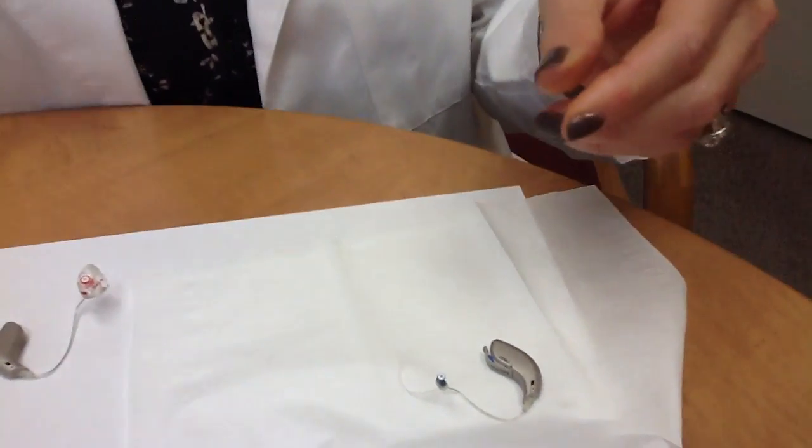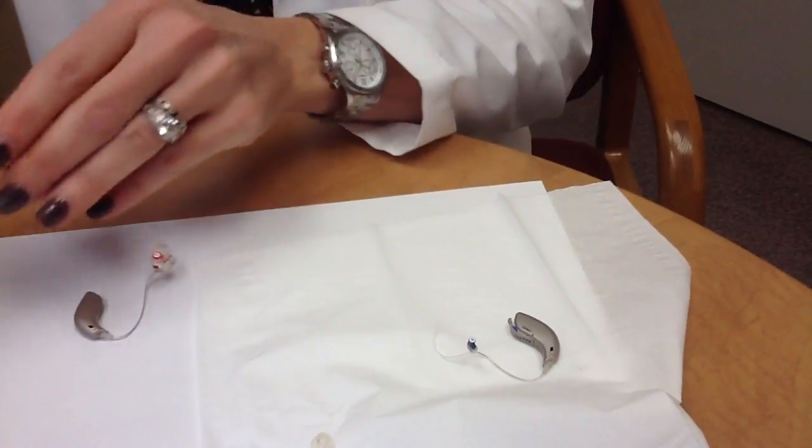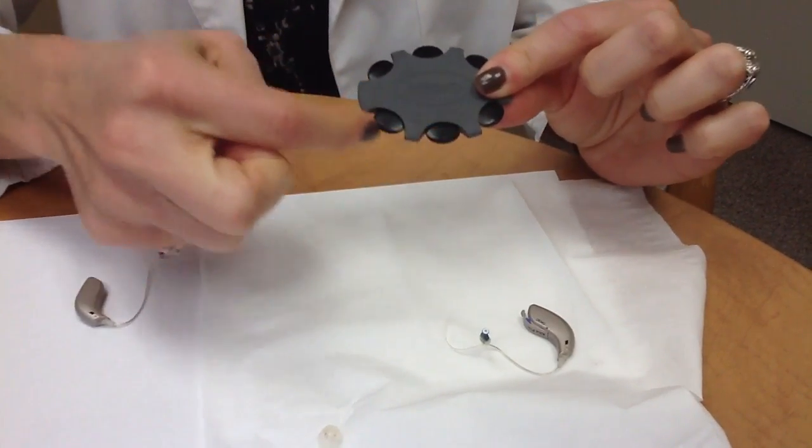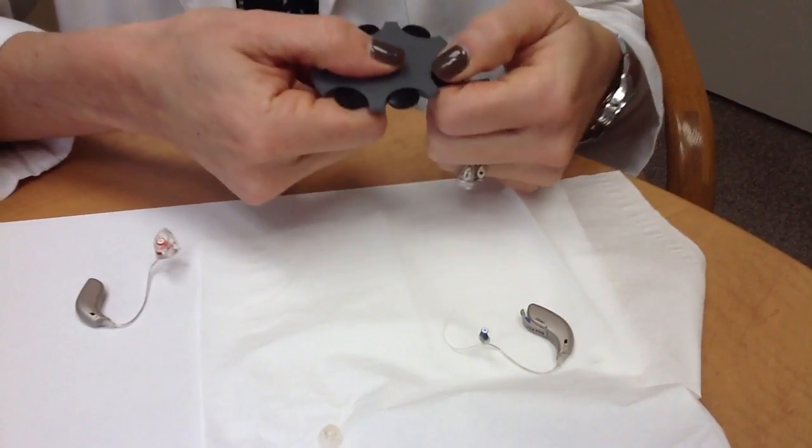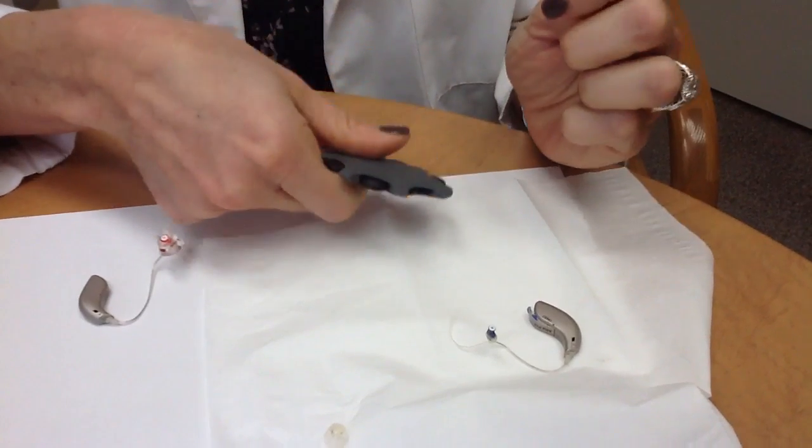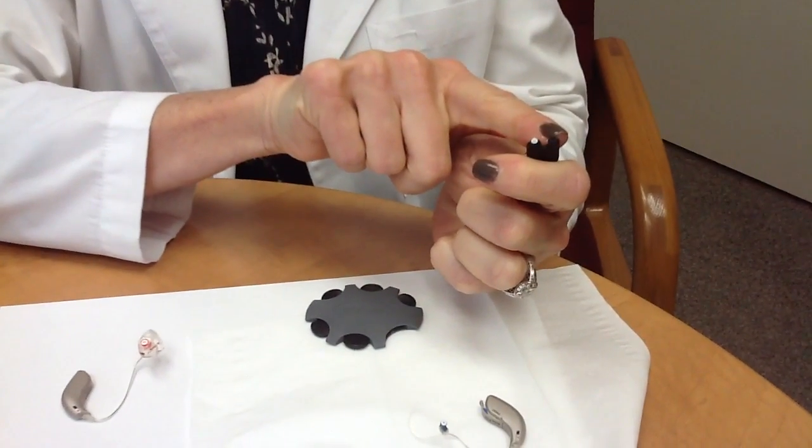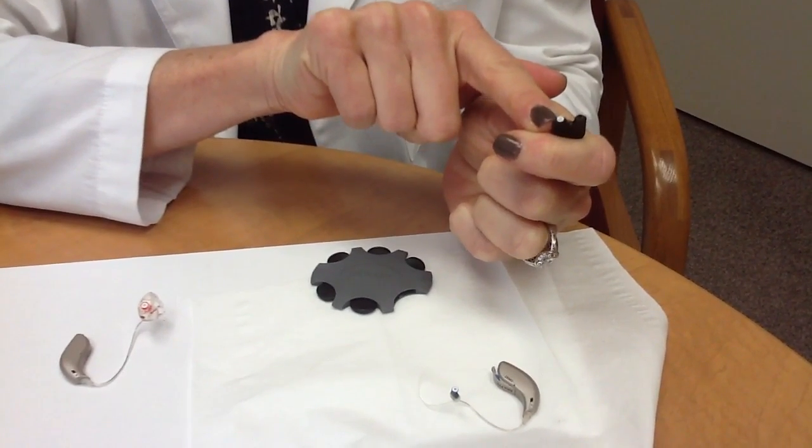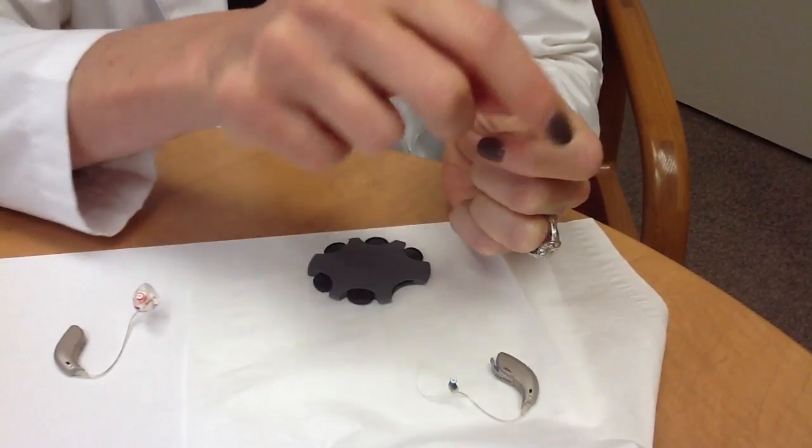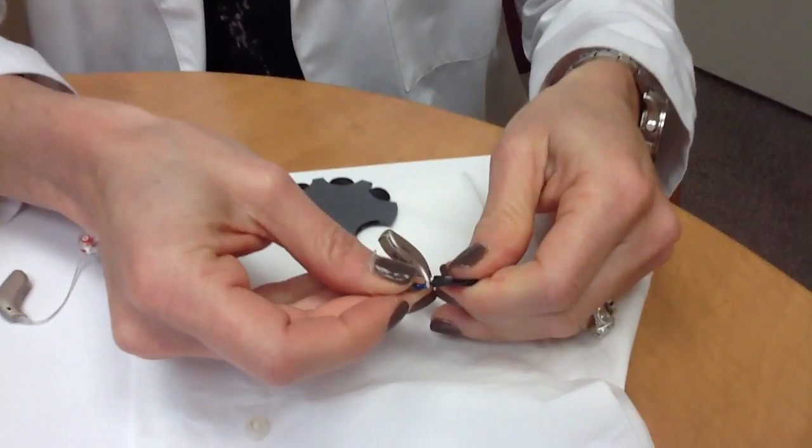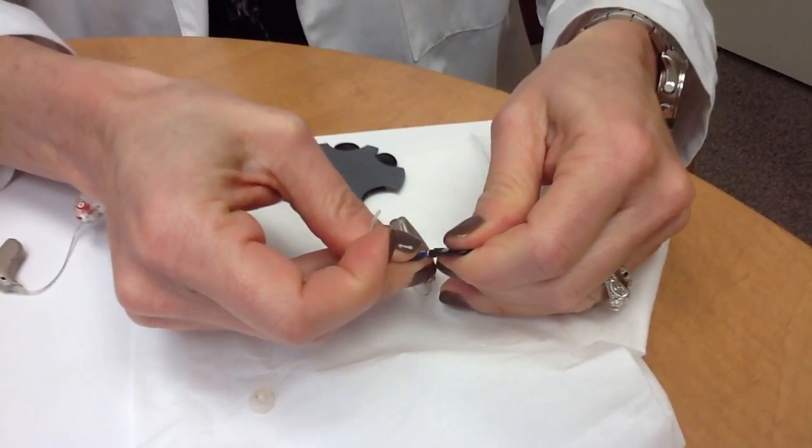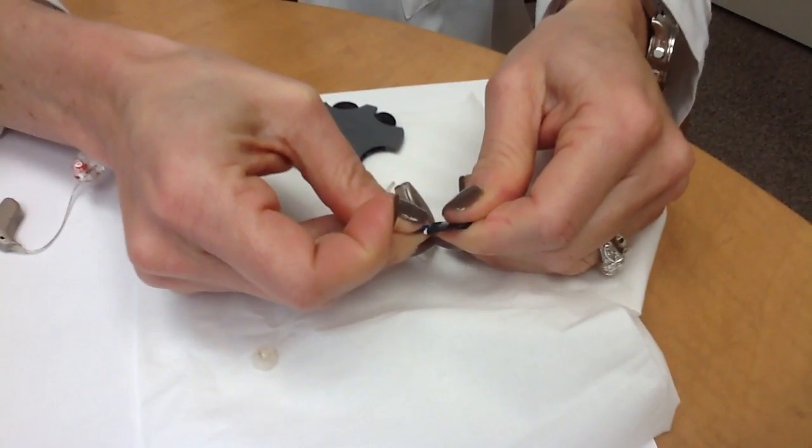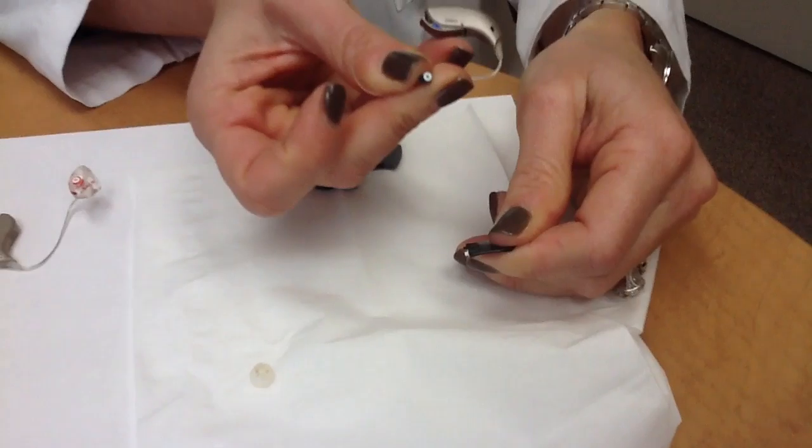For this particular company, the wax guard looks like this. Instead of having sticks, they're like little petals on a flower. Each petal has a removal side and a new wax guard. Again, to take the old one out, you use the removal side and simply push in and pull out. Then you move to the new one, push in and pull out, and it stays.